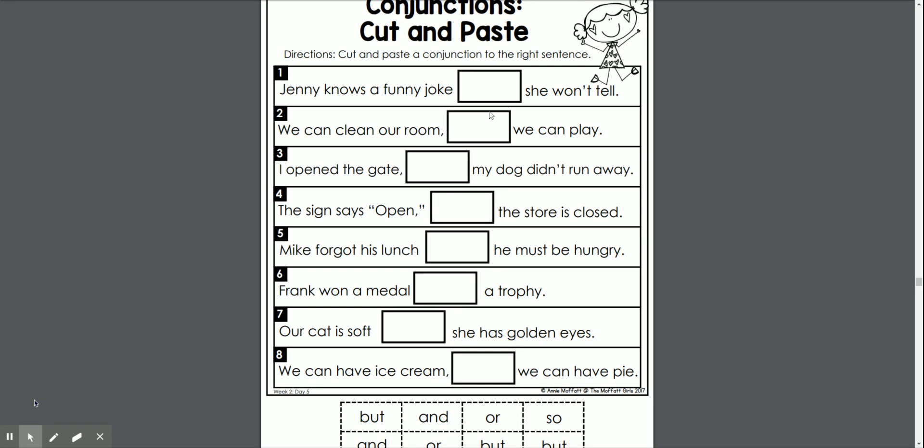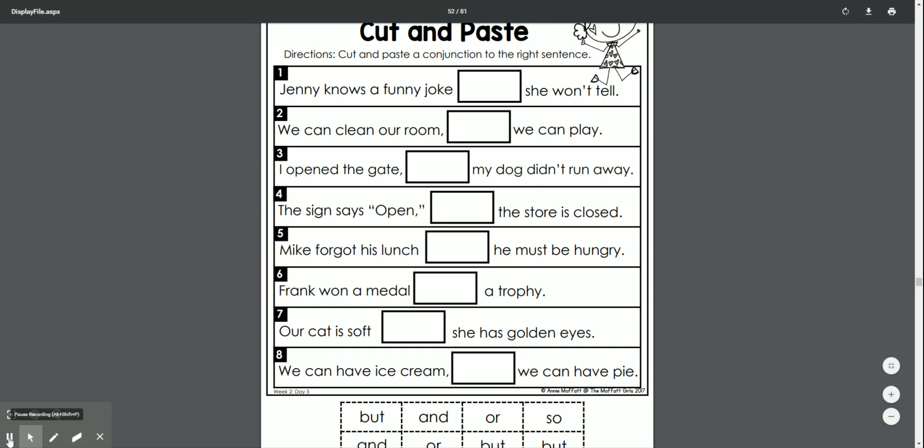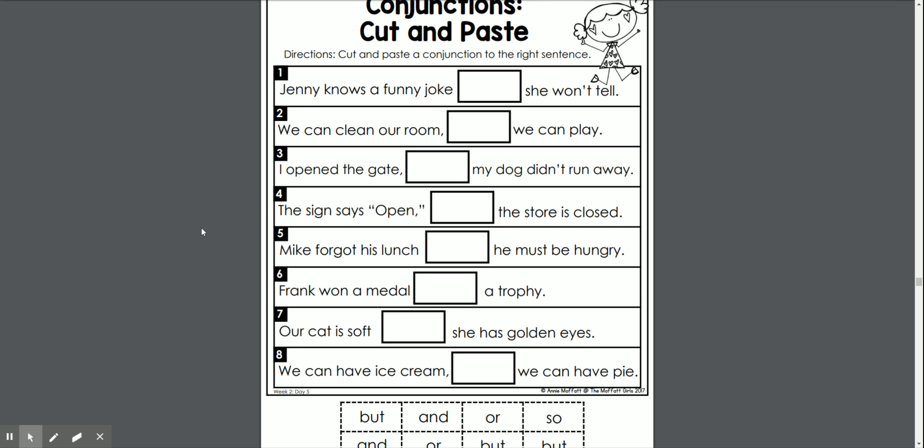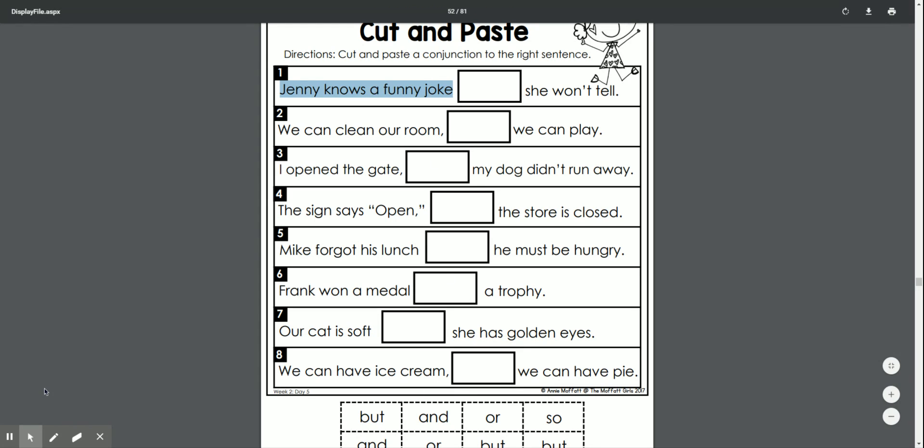So if we take a look at the first one, we're going to have to figure out. So Jenny knows a funny joke. Blank, she won't tell. So this one is interesting. So this one is going to be a little interesting. We're going to have Jenny knows a funny joke and you're going to look to see what sounds right to your ear here. We can do Jenny knows a funny joke and she won't tell. We could do Jenny knows a funny joke, but she won't tell. We only have eight down here, so we might have to skip it and go back to it.